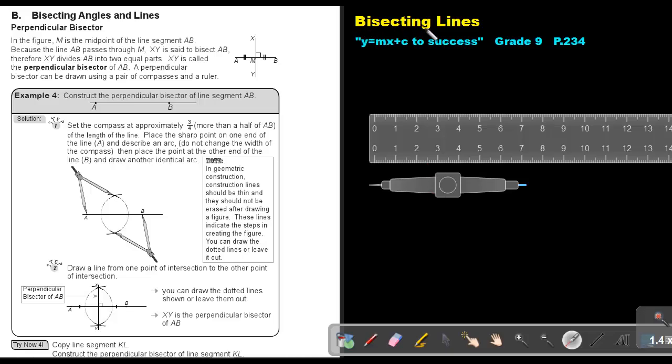Part 4: Bisecting lines. You will find this on page 234 in the Namibia Mathematics Grade 9 textbook Y equals MX plus C to success.